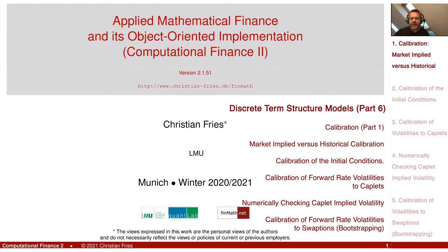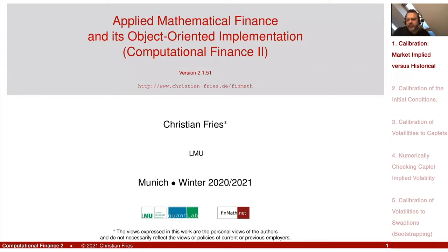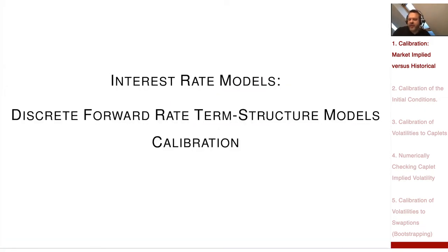In the lecture on applied mathematical science, we are still in the section on interest rate models — models having a numerical implementation, or where we favor a numerical implementation because the model is big and more generic. We introduced the model for a discretized term structure, where the evolution of the forward rate has been specified: the LIBOR market model. Today I'd like to start talking about the calibration of the model.